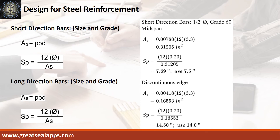At short direction, given mid-span rho equals 0.00788, b equals 12 inches, and d equals 3.3 inches, the area of steel is 0.31205 square inches, and the spacing for 1/2-inch diameter bar is 7.5 inches. At long direction, given mid-span and discontinuous edge rho equals 0.00418, b equals 12 inches, and d equals 3.3 inches, the area of steel is 0.16553 square inches, and the spacing for 1/2-inch diameter bar is 14 inches.